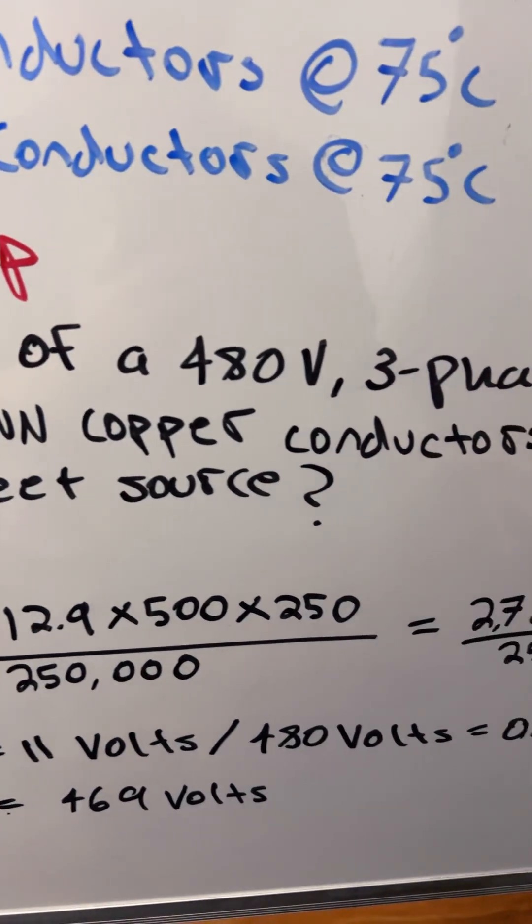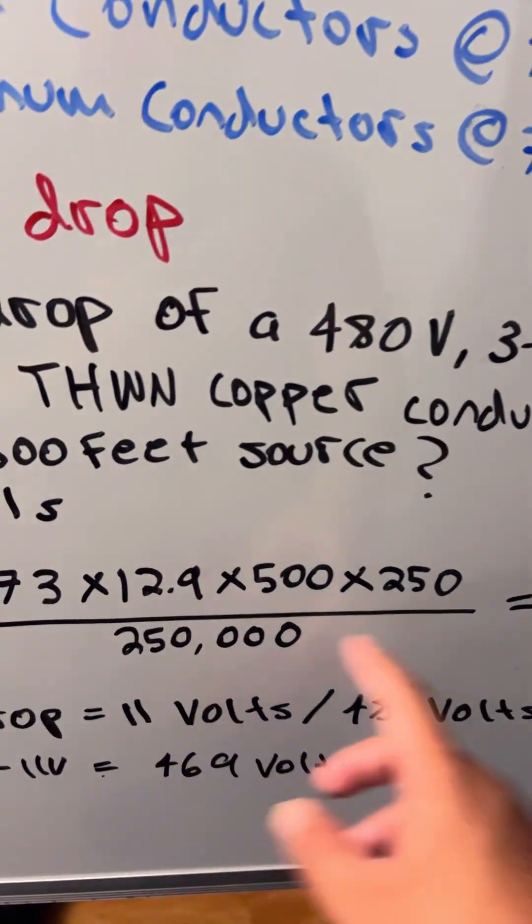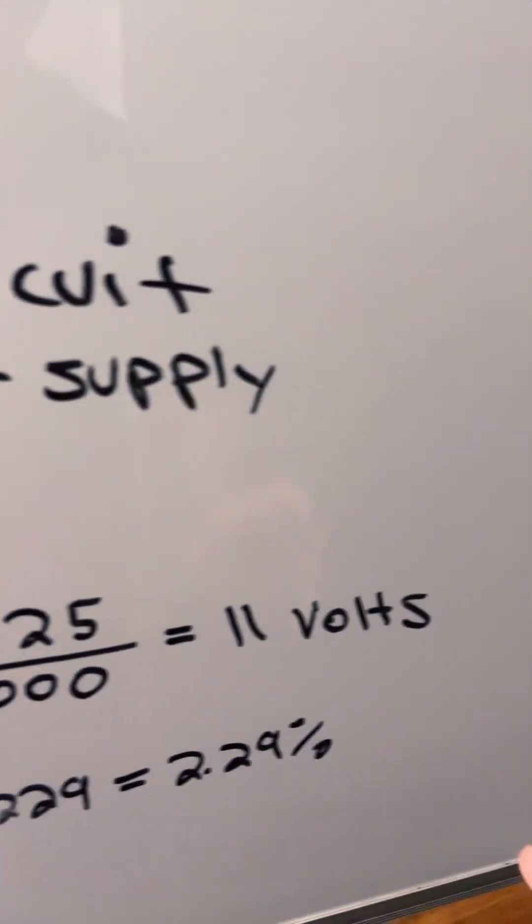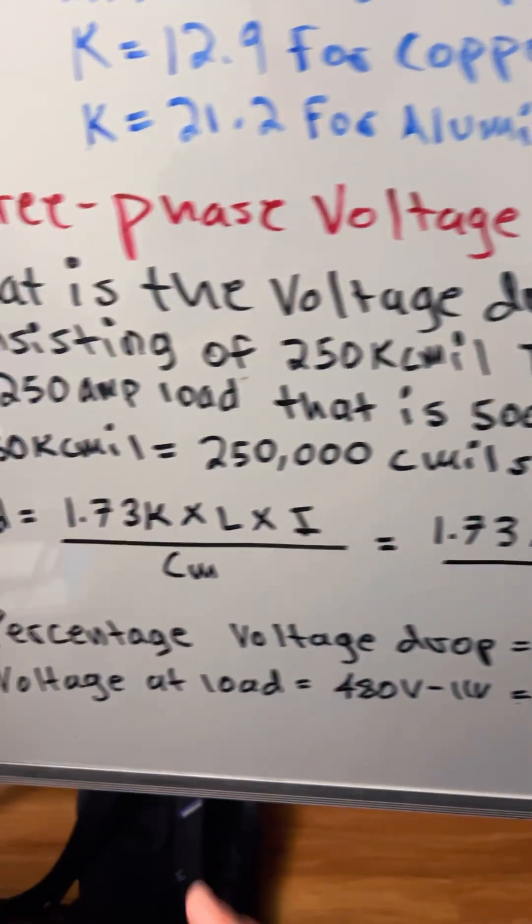And that gives you 11 volts. So for a percentage of voltage drop equals 11 volts divided by 480 volts.